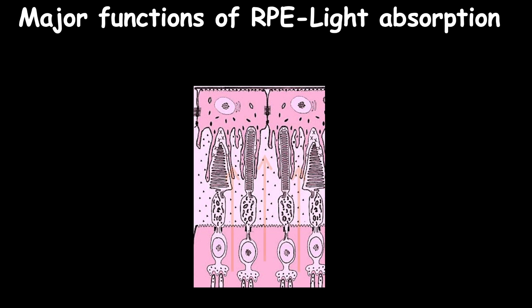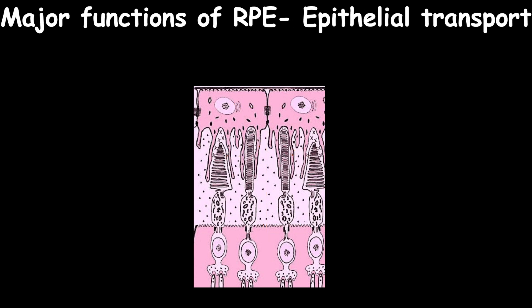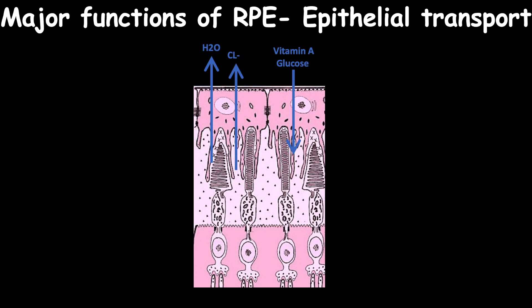One of the major functions of RPE is the absorption of light due to its pigmentation and the highly vascularized choroid underneath it. Another important function of RPE is epithelial transport, where it serves as the outer retinal blood barrier due to tight junctions between RPE cells.